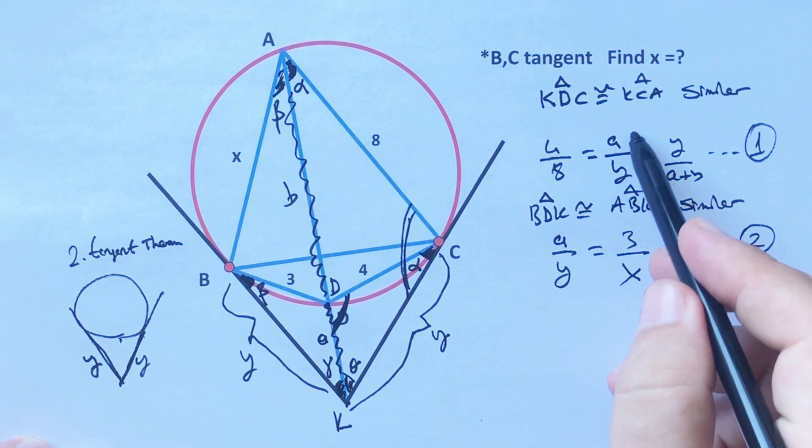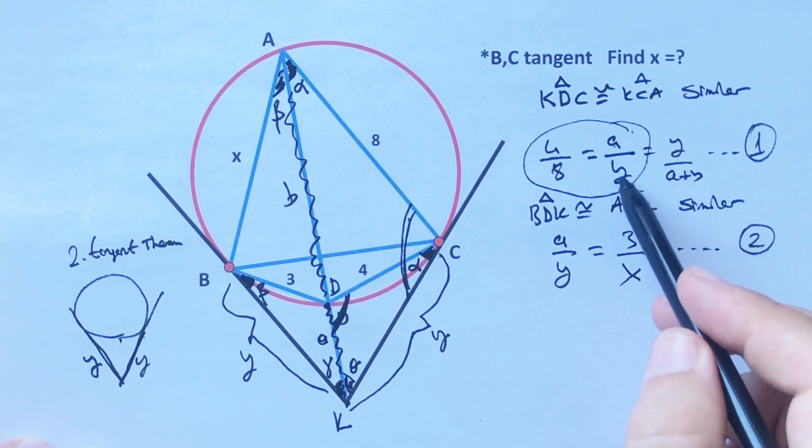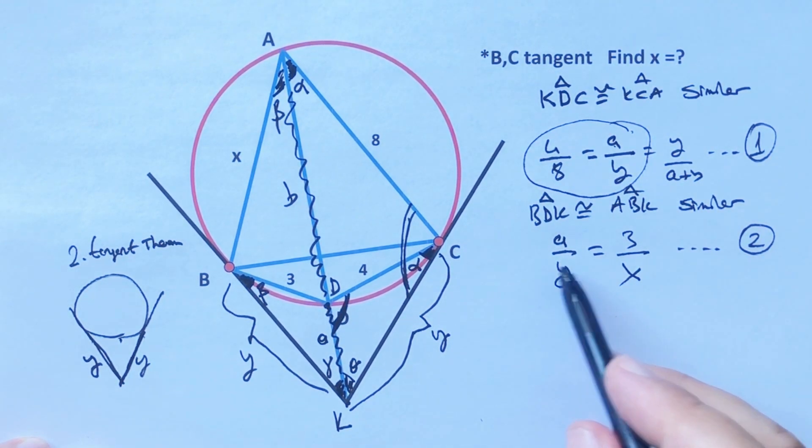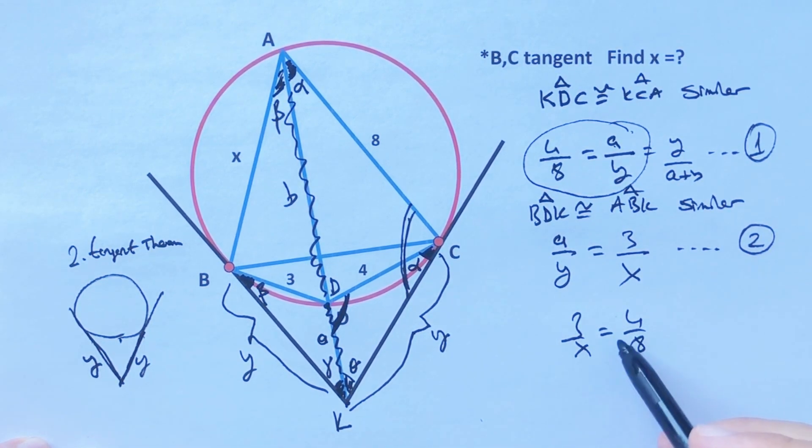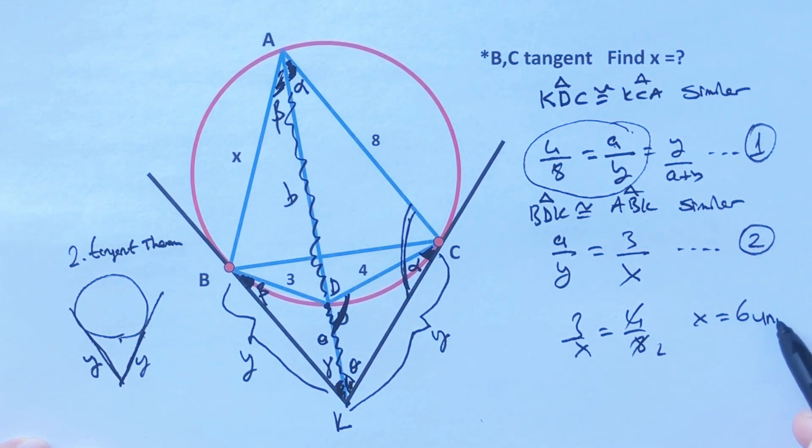So if we equalize these two equations, 3 over x must equal 4 over 8, right? And then let's simplify. x equals 6 units.